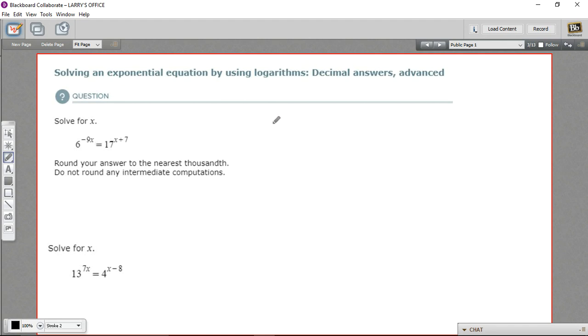So let's start just by taking the log of both sides of the equation. So this is going to be the log of 6 to the negative 9x, and it's going to equal the log of 17 to the x plus 7.